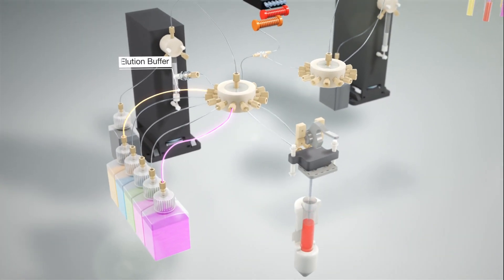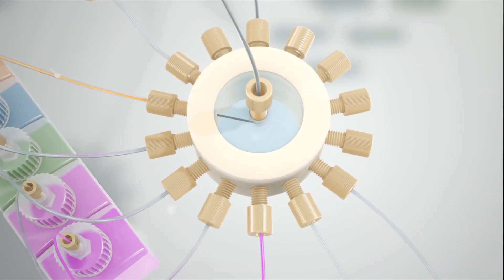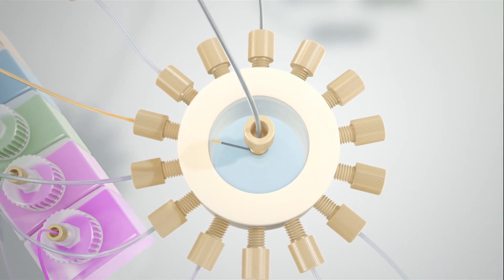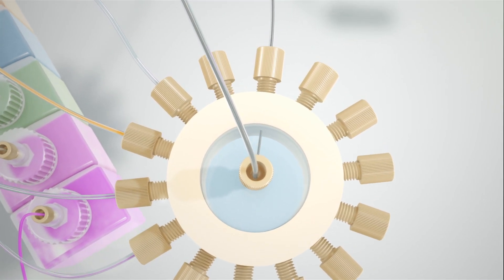The instrument first creates a negative control by combining elution buffer with master mix. This mixture is placed in the line leading to the thermal cycler followed by a slug of oil.